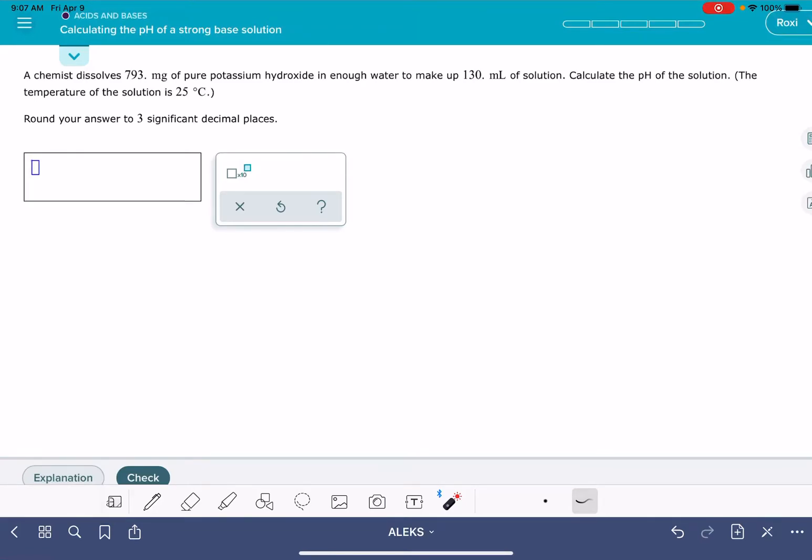In this video, I'm going to show you how to solve the Alex problem called calculating the pH of a strong base solution. In this problem, you're going to be given an amount of a strong base. My problem is using KOH as the strong base, and you're also going to be given a volume of solution, and then you're asked to calculate the pH of the solution.